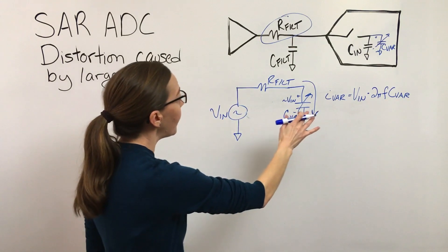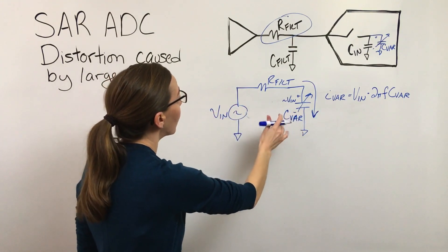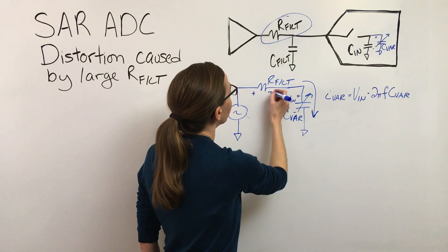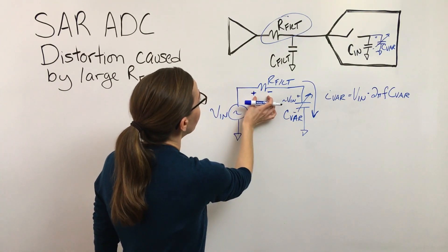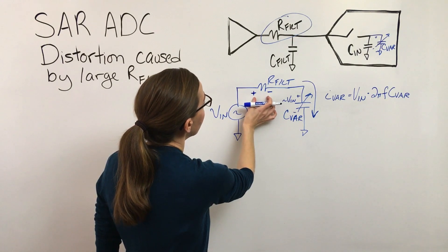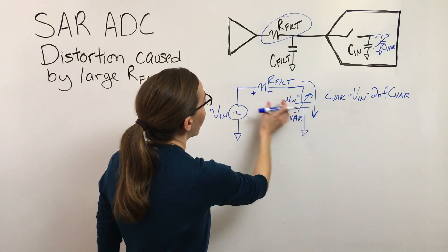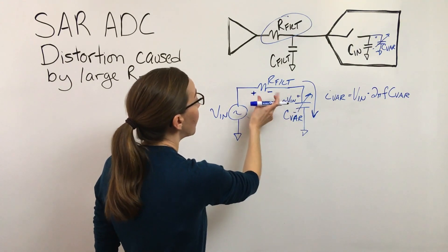And then what we want to know, to determine and to quantify the distortion, is what's the voltage drop across this resistance due to this non-linear capacitor.